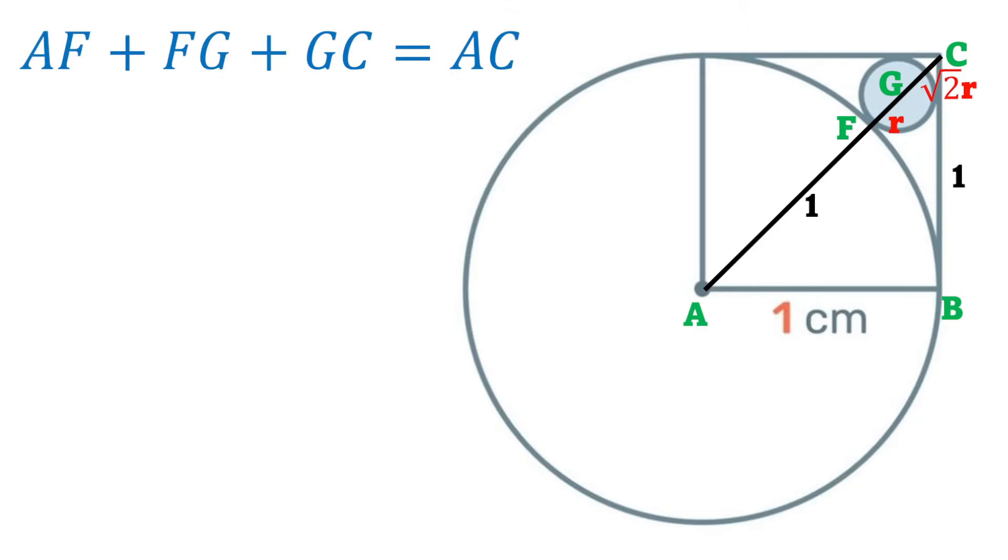So we have that AF plus FG plus GC is equal to the entire length AC. But we know that AF is one, FG is r, and GC is root two r, and overall AC is root two.